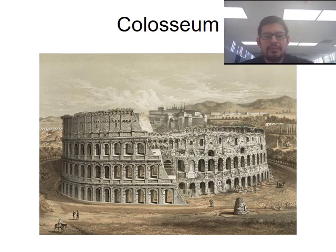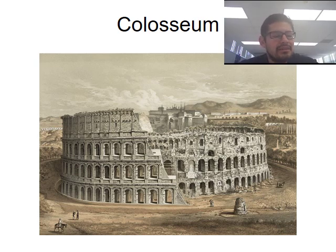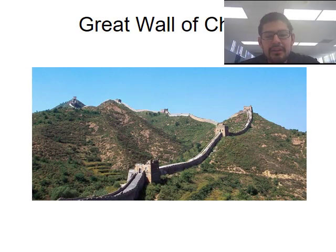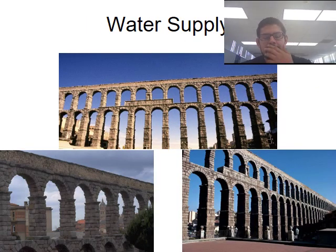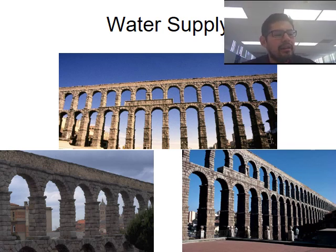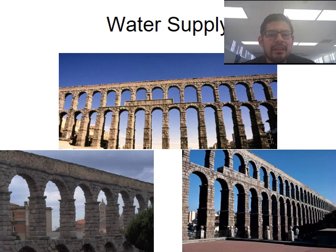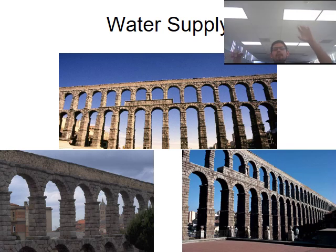Although the Colosseum is not the same as it used to be — the left is the before, the right is the after — it still stands and you can still go into it, which considering how long it's been is quite amazing. The Great Wall of China is another great example of architecture and design. The Roman aqueducts are another important innovation — someone had to invent a method for transporting water from a high location down to the rest of the city, before we had the pipes we have now.